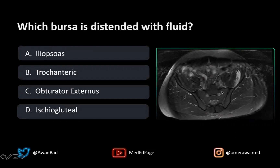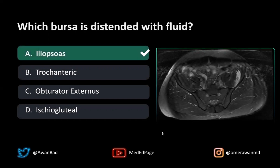If we take a look at this image, notice that the bone marrow signal is normal. This here is the sacrum, this is the right iliac wing, and this is the left iliac wing. But deep to the iliacus/iliopsoas muscle, there's fluid — a T2 bright signal distending a bursa. Notice on the right side there is no such fluid. Because it's deep to the iliopsoas and iliacus muscle, this is known as the iliopsoas bursa, and thus A is the correct answer.